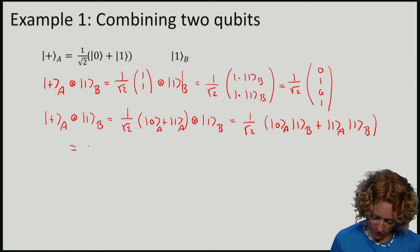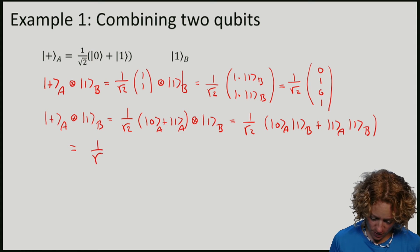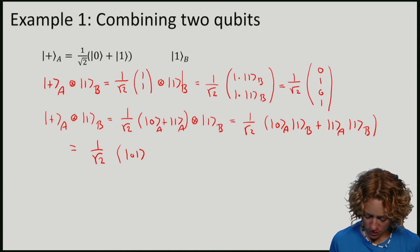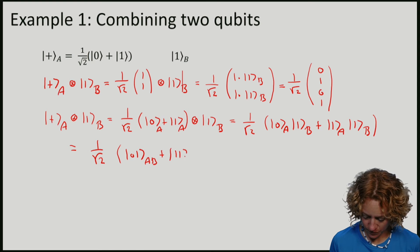Let's use our lazy notation, with which this is 1 over square root 2 times (|01⟩ on AB plus |11⟩ on AB).